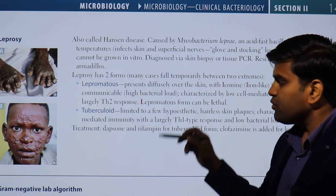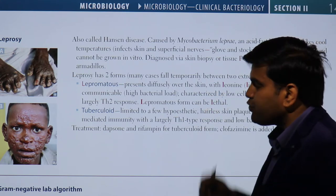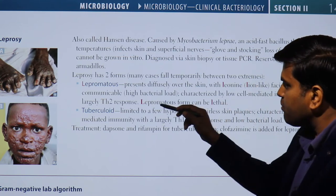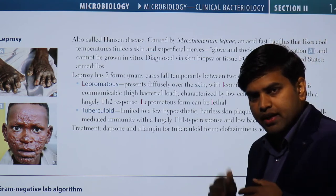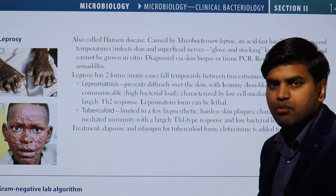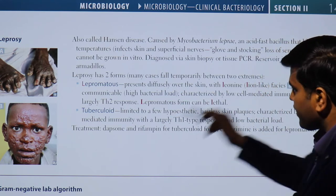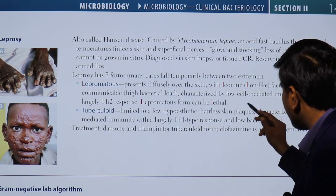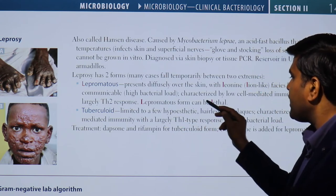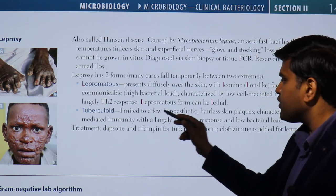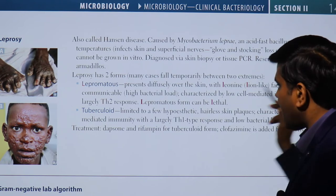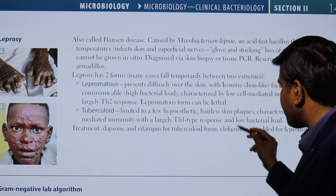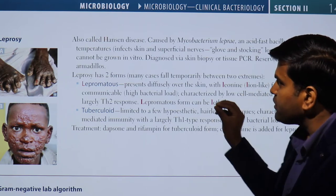The reservoir in the United States is the armadillo. The disease has two extreme forms: tuberculoid leprosy, the initial stage, and lepromatous leprosy, the advanced stage. Lepromatous leprosy spreads diffusely over the skin with a lion-like facies and is communicable due to high bacterial load, with low cell-mediated immunity and a Th2 response. Tuberculoid form is limited, with few hypopigmented skin plaques, high cell-mediated immunity, Th1 response, and low bacterial load. Treatment is dapsone for tuberculoid, with clofazimine added for lepromatous form.